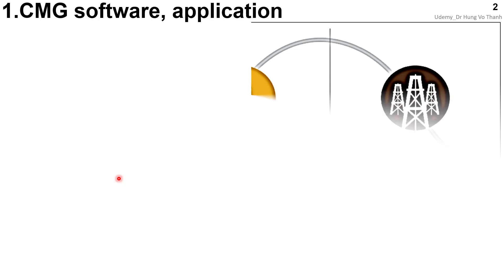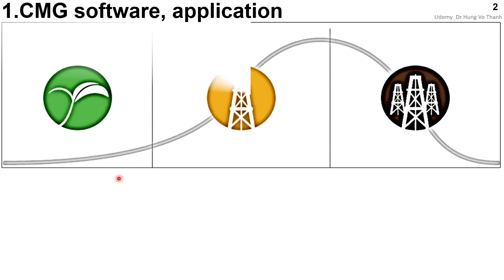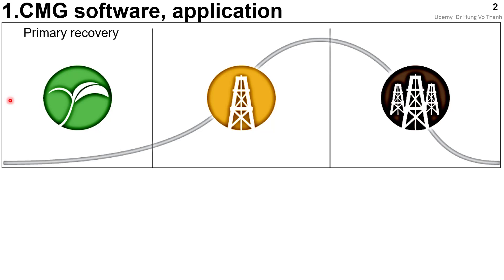Now we would like to go through the application of CMG software. As you can see in this illustration, this represents the oil life cycle in the oil field. First is primary recovery — at the beginning of the oil field, after exploration and development, you start to produce oil and gas.